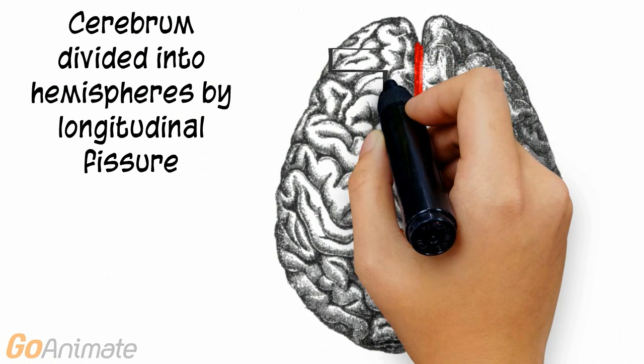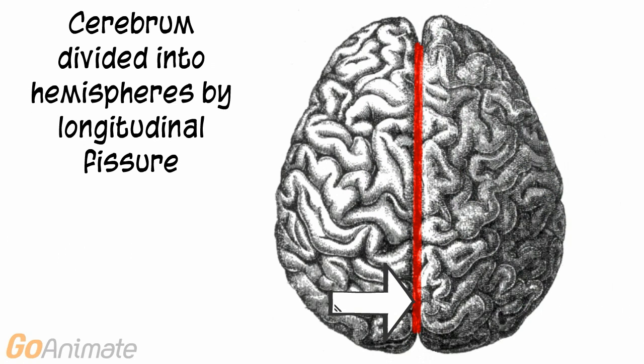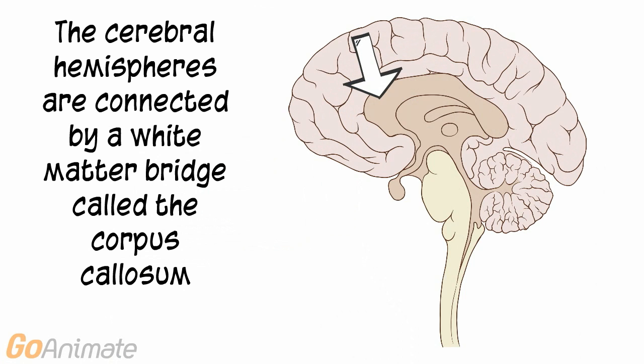The cerebrum is divided into two hemispheres by the longitudinal fissure. This is a mid-sagittal section of the brain. We can see the corpus callosum, a white matter bridge that unites both hemispheres of the cerebrum.